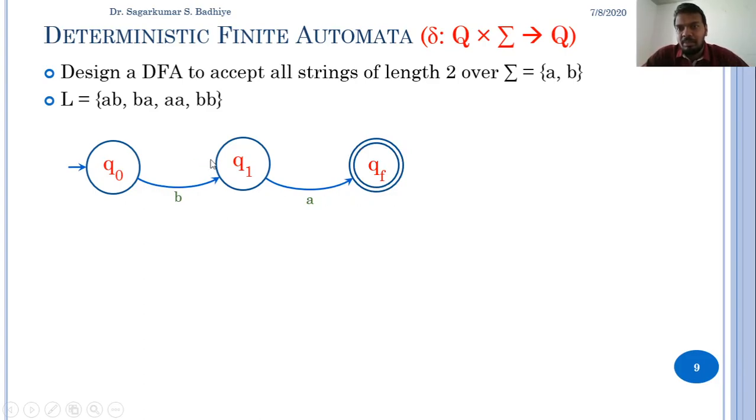To accept aa, again I start from q0, read a and go to a particular state, then from this state read another a and go to a final state. This accepts the string aa.